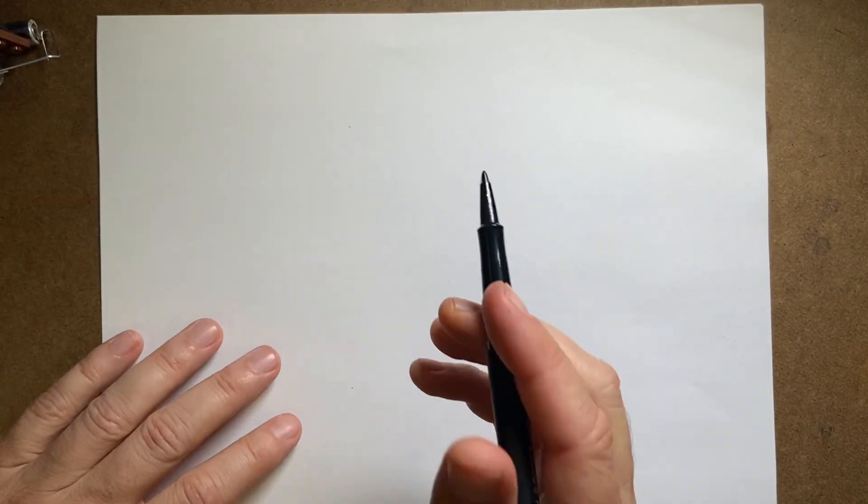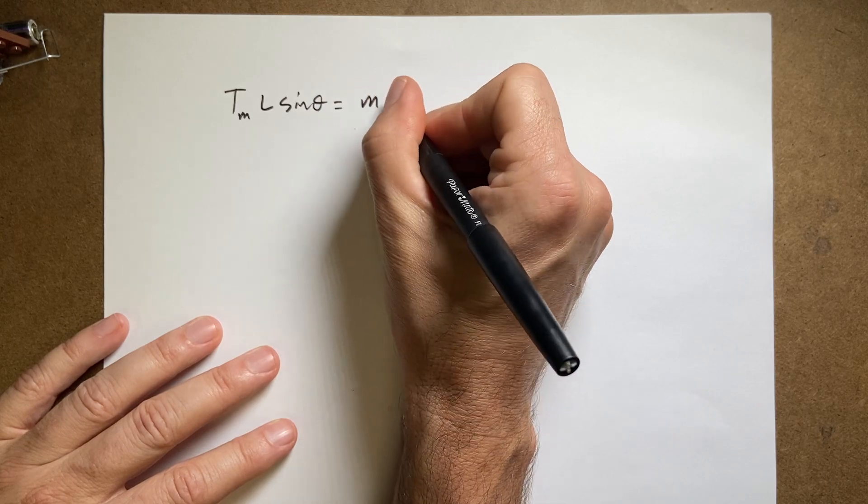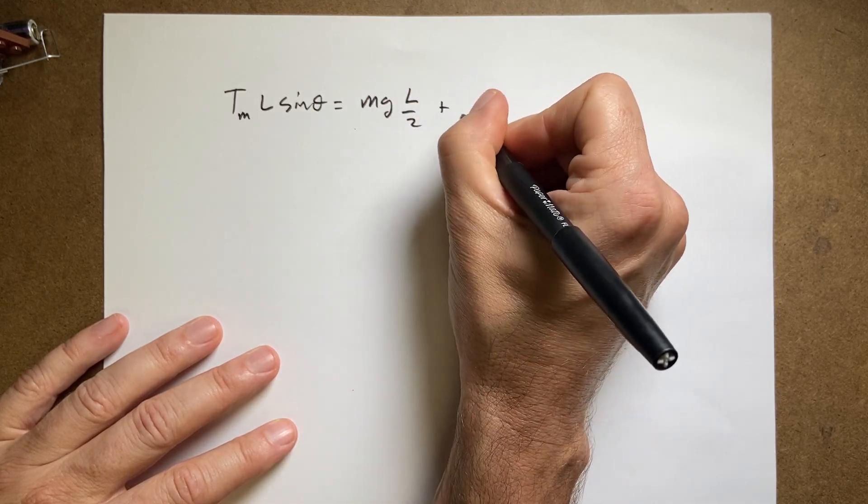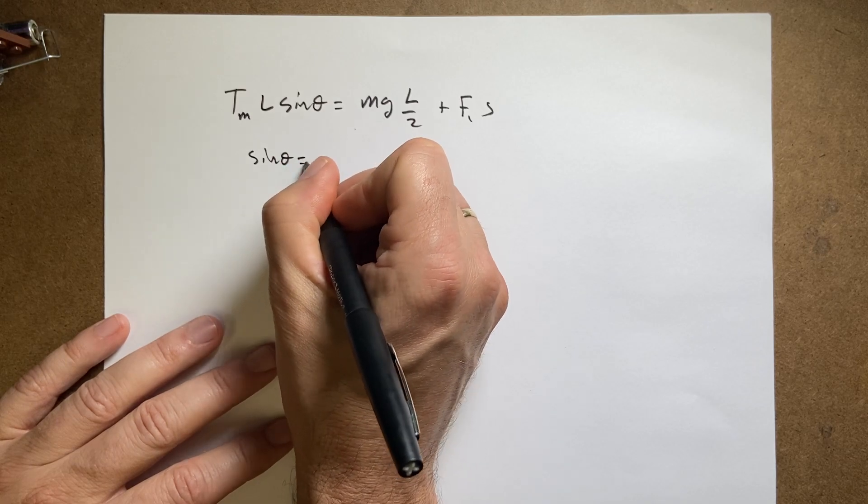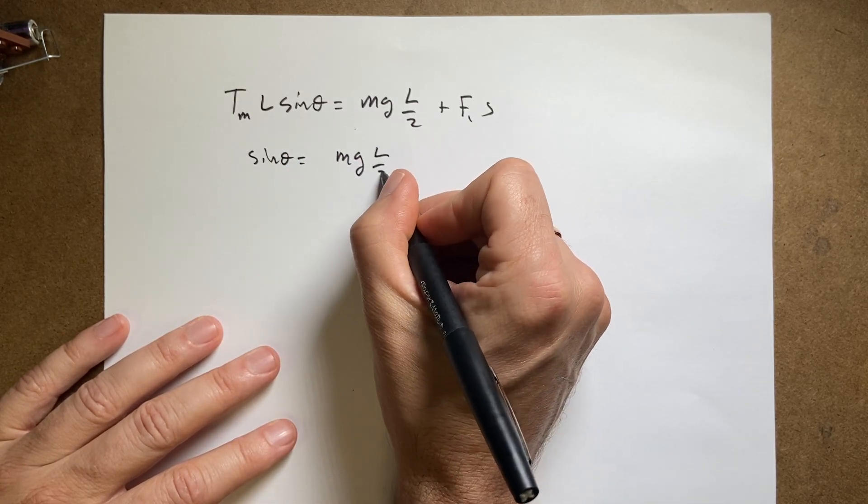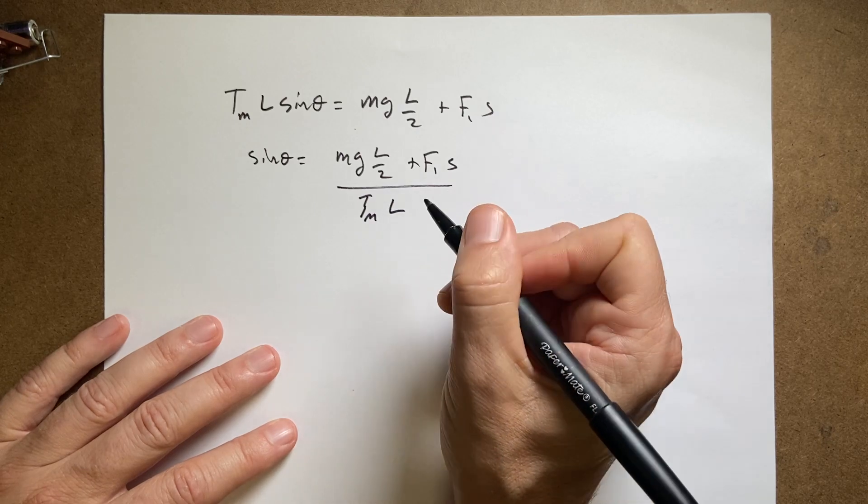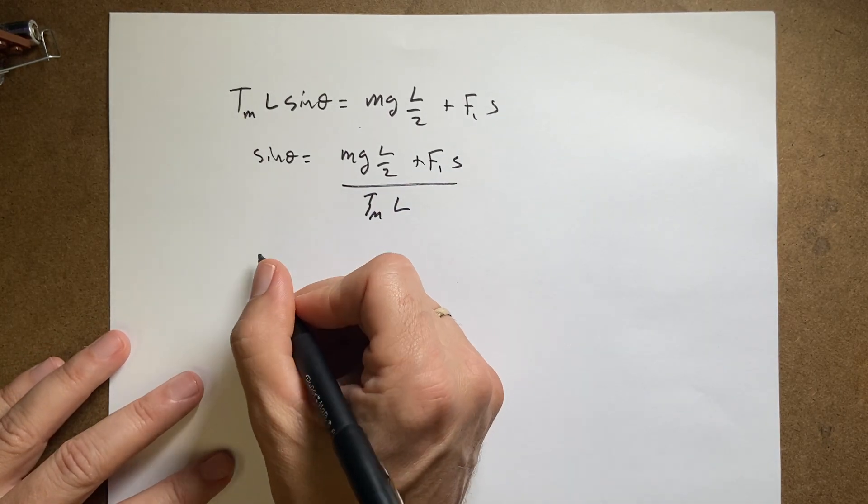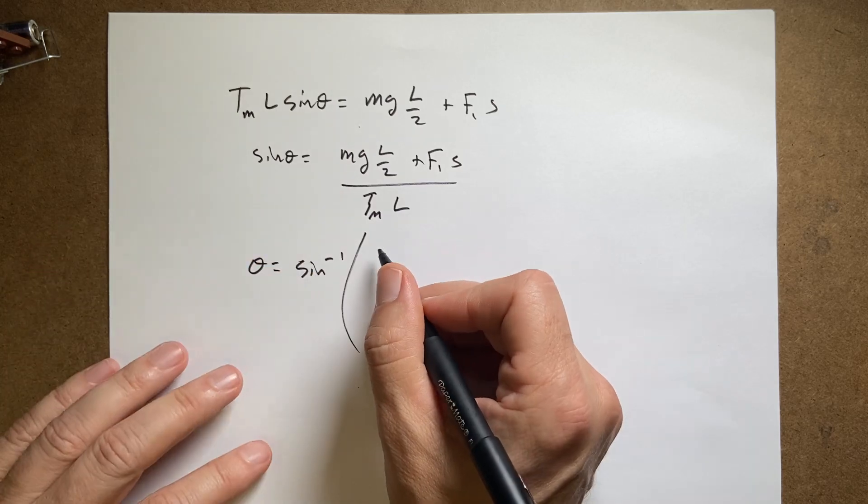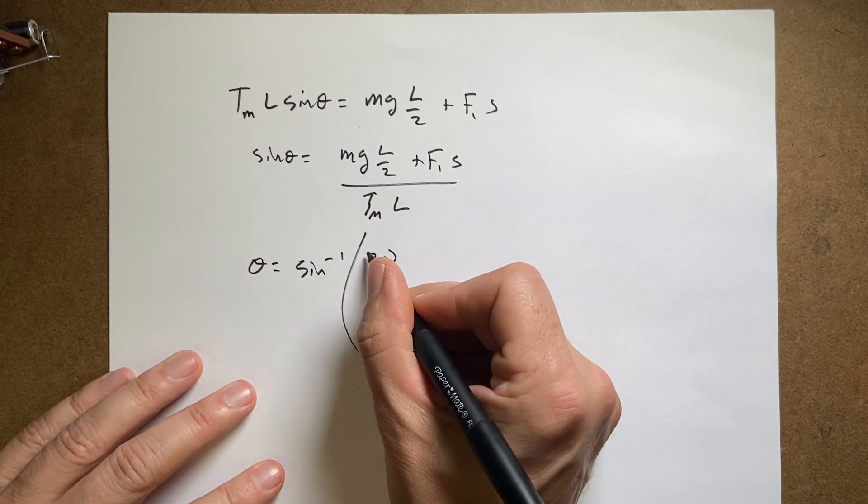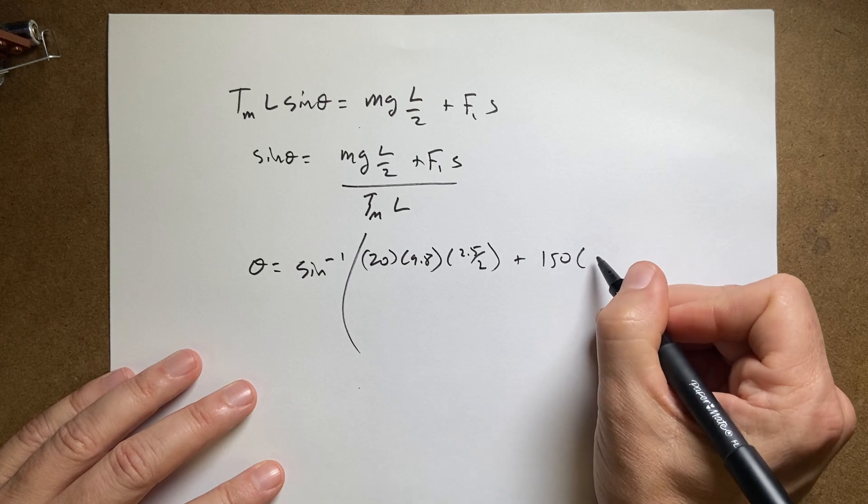I'm going to put in T max. So let me rewrite that equation up here. So I'm going to say T max L sine theta equals M G L over two plus F one S. Now I want to solve for sine theta. So I'm going to divide both sides by this. I get sine theta equals M G L over two plus F one S all of that over T M, which I know times L. Now I can take the inverse sine of both sides. I get theta equals sine inverse. I know it looks crazy. Like you can't do all that. I can do it. And I'm going to put my numbers in.